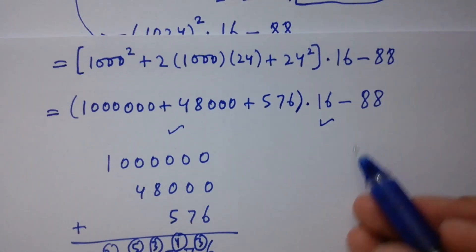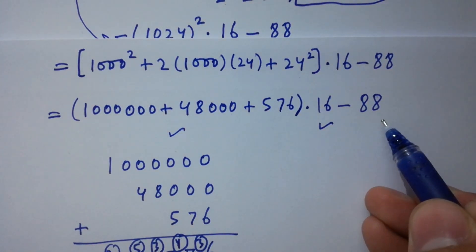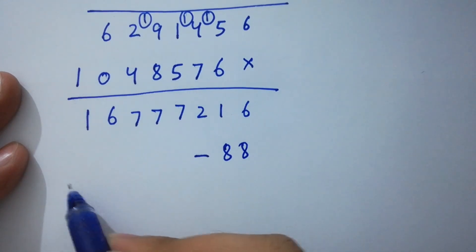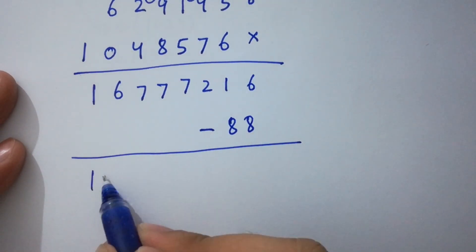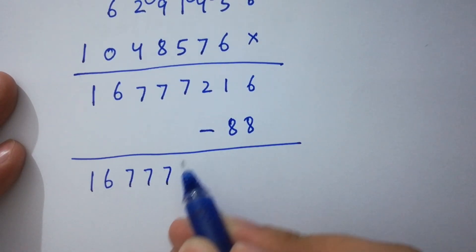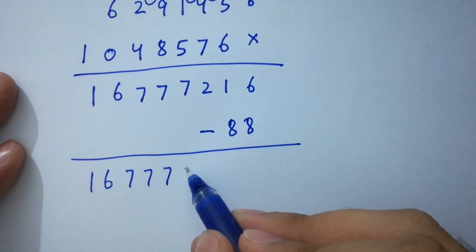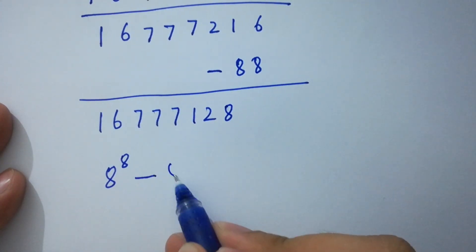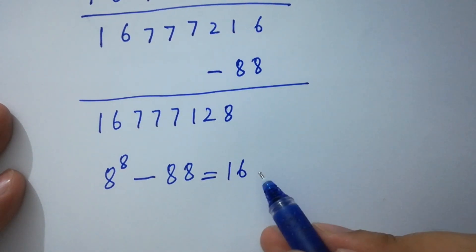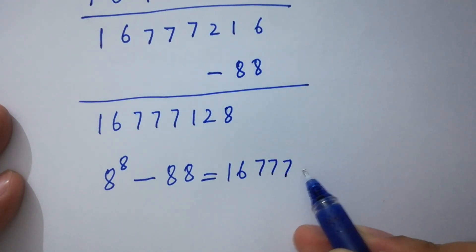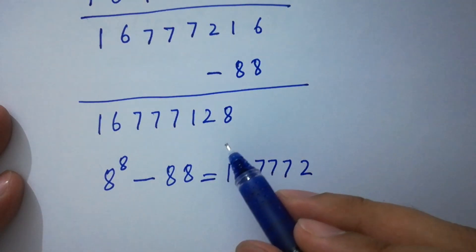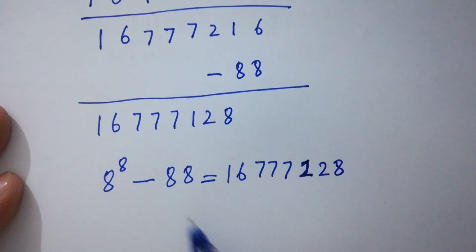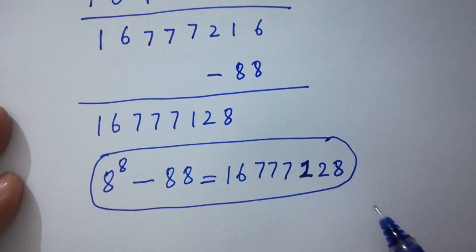In the last step, we subtract 88. So 16,777,216 minus 88. The last digits: 216 minus 88 equals 128. So finally, 8 to the power 8 minus 88 equals 16,777,128. That is our final answer without a calculator.